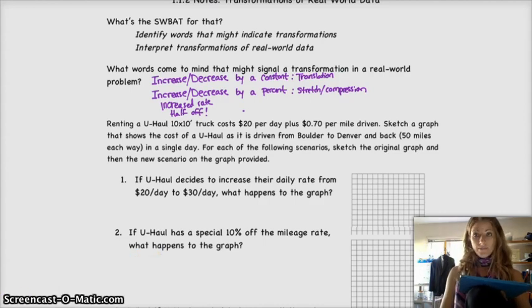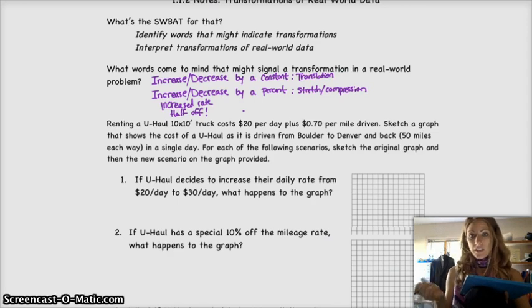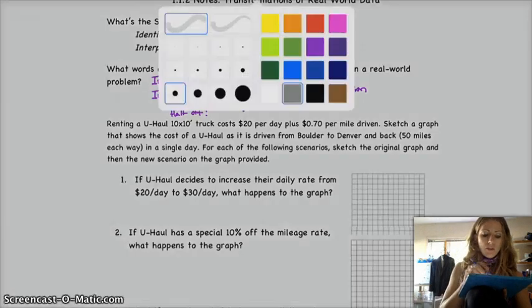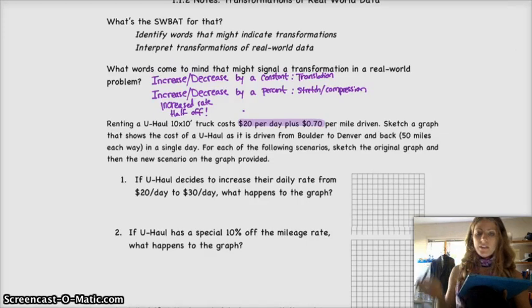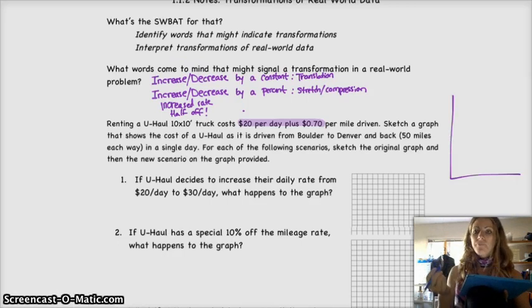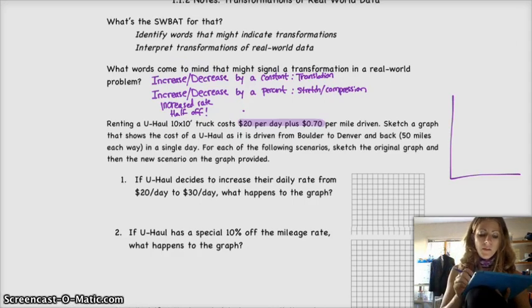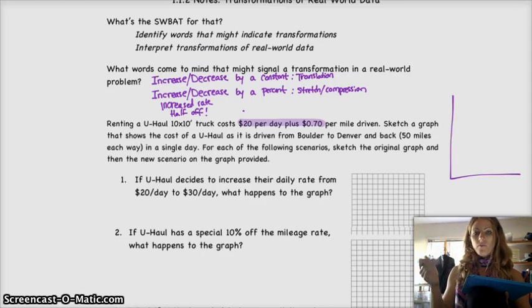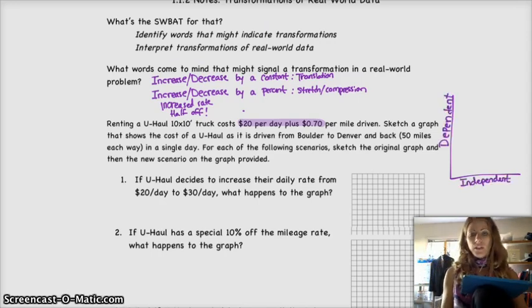So problem number one. We don't even have an original graph section. So I think it would be really helpful to see that original graph, the original pricing, the $20 per day plus $0.70 per mile. So just to kind of sketch that, I'm going to do that on the side. What you're thinking, you've got to think, what's the independent variable, which is the thing that goes on the x-axis, and which one is the dependent variable, which goes on the y.